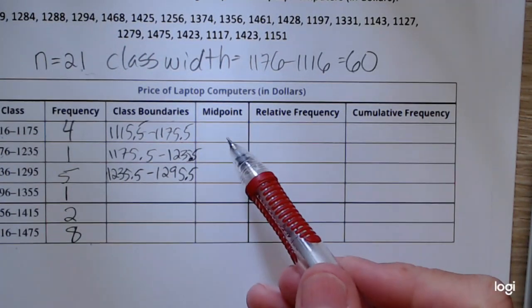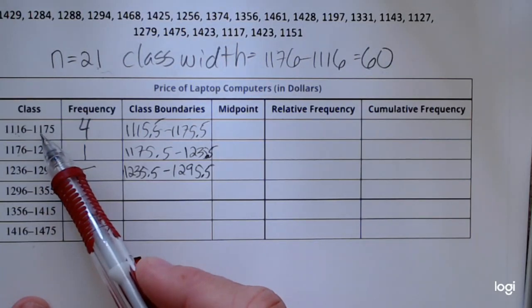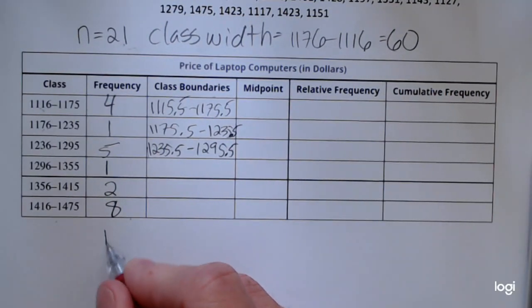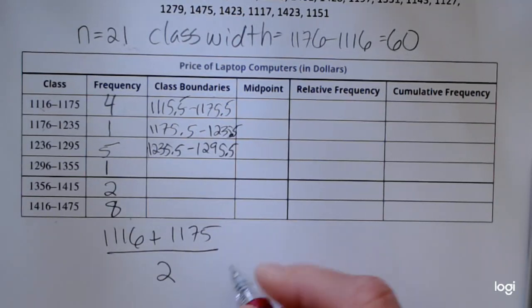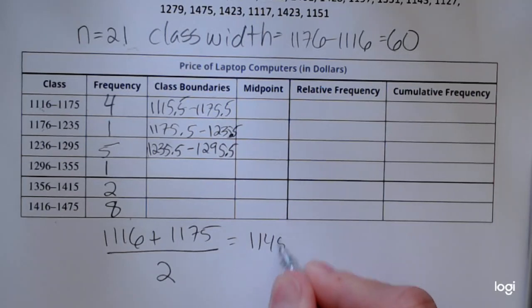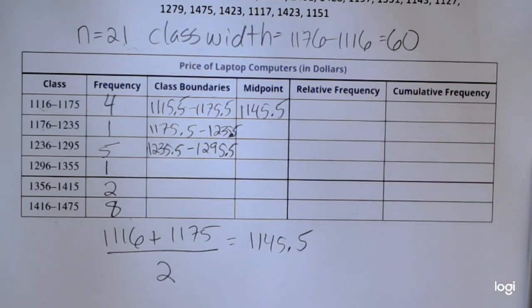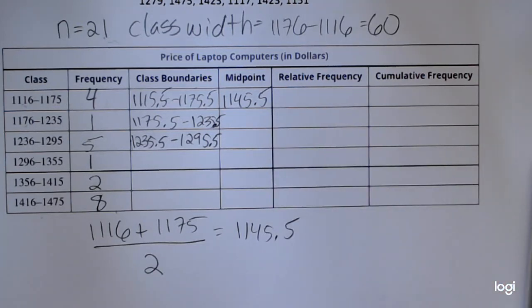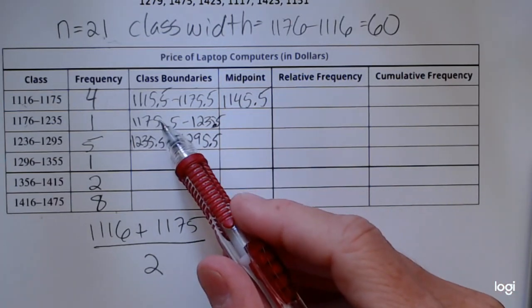Now the midpoint is just the average of the lower class limit and the upper class limit for each class. So to find this first class midpoint, I'm going to take 1116 added to 1175 and divide by 2, and I get a value of 1145.5. Now the midpoint, you can use midpoints in your histogram as tick marks along the horizontal axis.